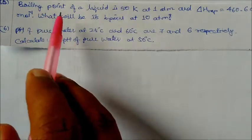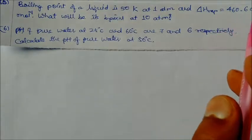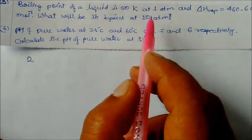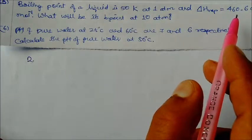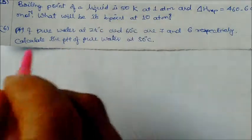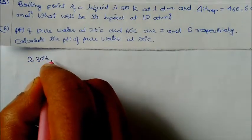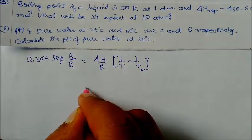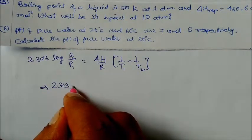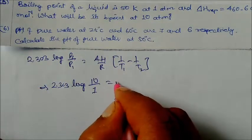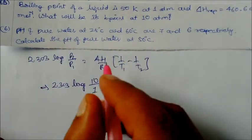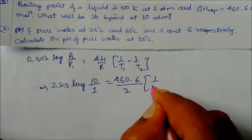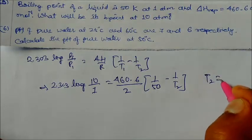Next question: the boiling point of a liquid is 50°C at 1 atm, and the heat of vaporization is 4160.6 cal/mol. What will be its boiling point at 10 atm? Using 2.303 × log(P2/P1) = (ΔH/R) × (1/T1 − 1/T2): log(10/1) = 4160.6 / 2 × (1/323 − 1/T2). Solving gives T2 = 600 K as the boiling point at 10 atm.